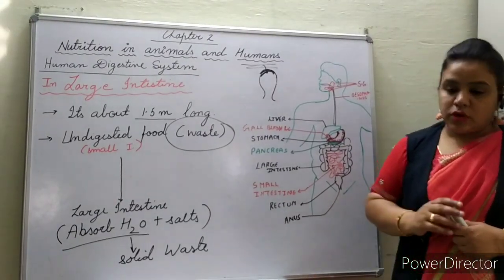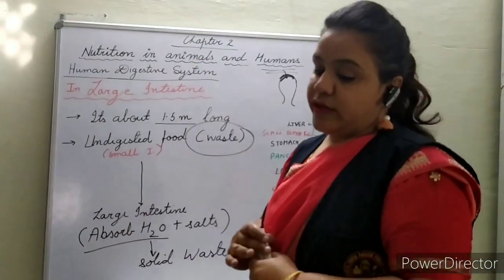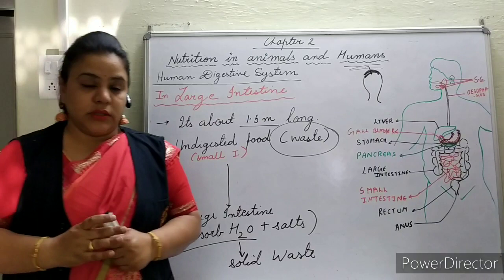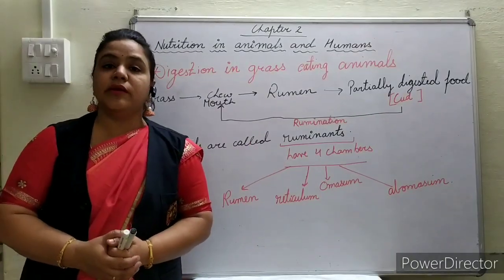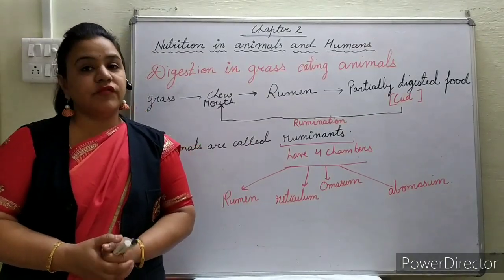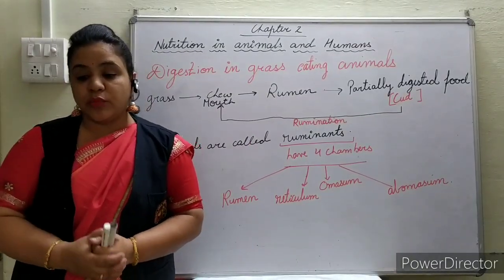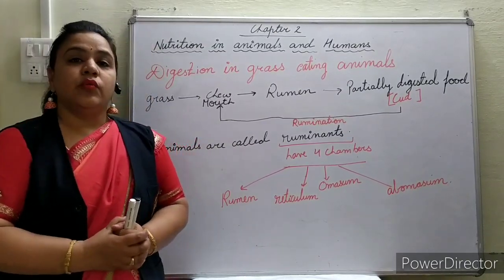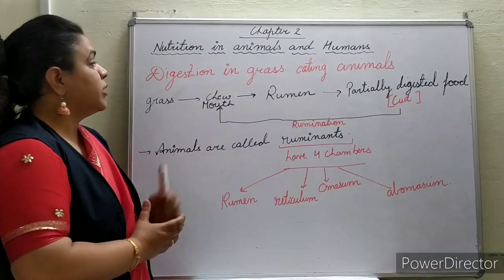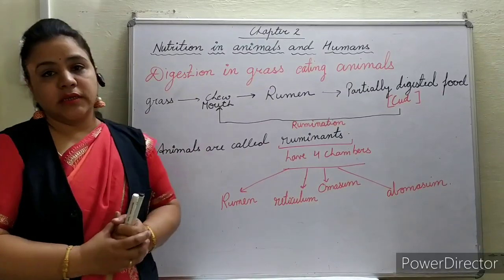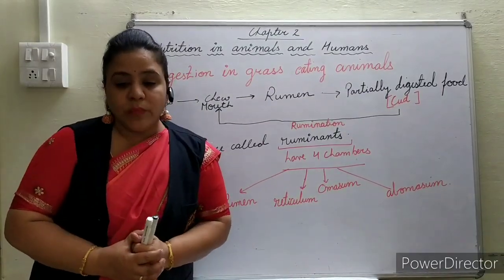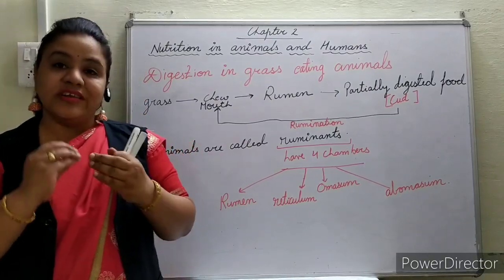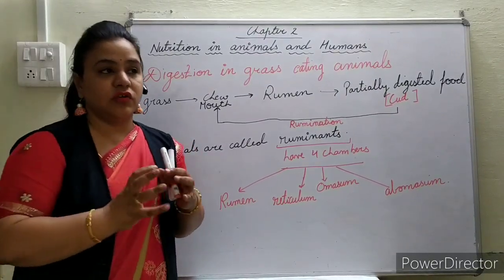Now we will move to the next topic: the process of nutrition in animals. Different animals have different body structures, so the process of nutrition is different in different animals. Today we will be learning about digestion in grass-eating animals. It is very common to see grass-eating animals — they chew their food leisurely whenever they are free.